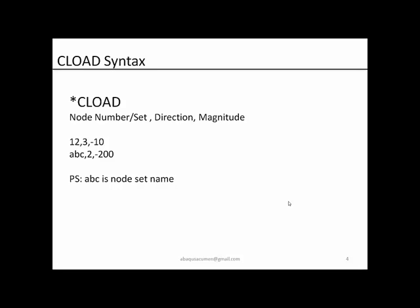Now let's understand how to apply a concentrated load in Abaqus software and what the exact syntax is. The Abaqus keyword for a concentrated load is *CLOAD. To apply a concentrated load, you provide a node number or a set, then a direction — x, y, or z — and then a magnitude. For example, applying at node 12 in direction 3 (z-direction) with a value of -10 applies the load opposite to the z-direction.